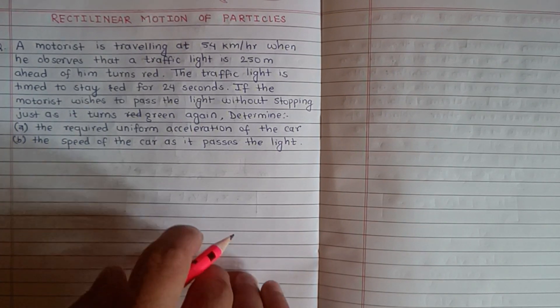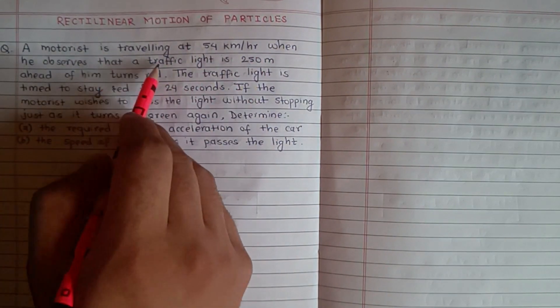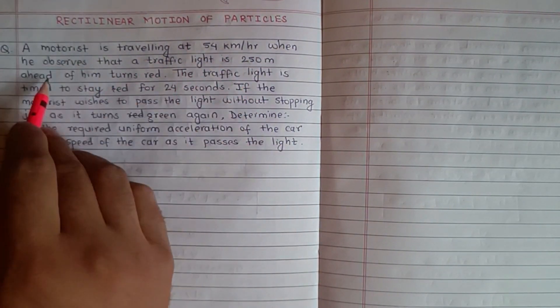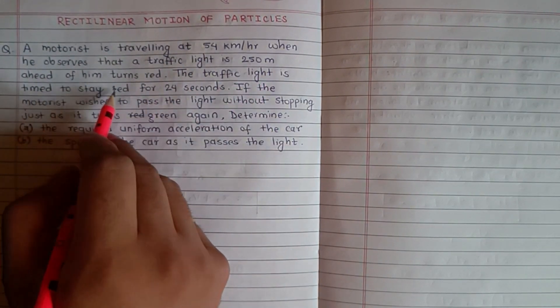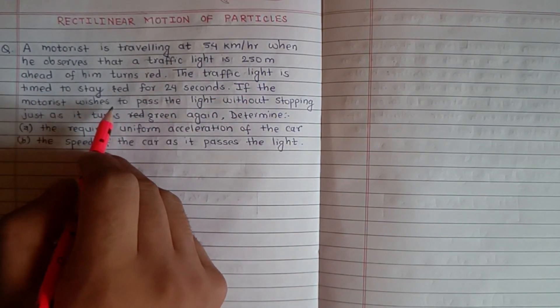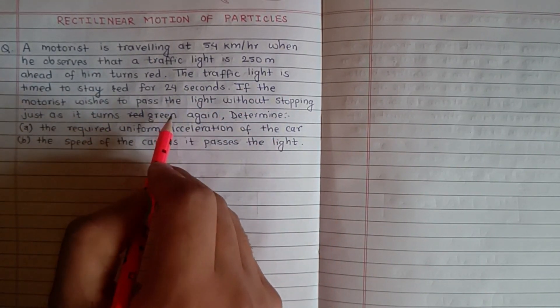The question is: A motorist is traveling at 54 km per hour when he observes that a traffic light is 250 meters ahead of him and turns red. The traffic light is timed to stay red for 24 seconds.